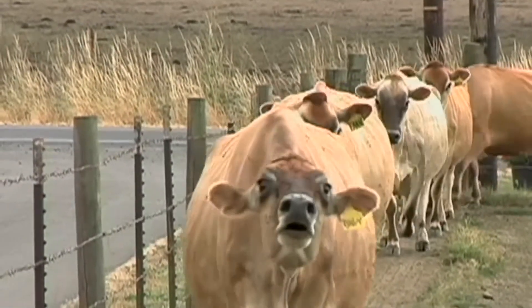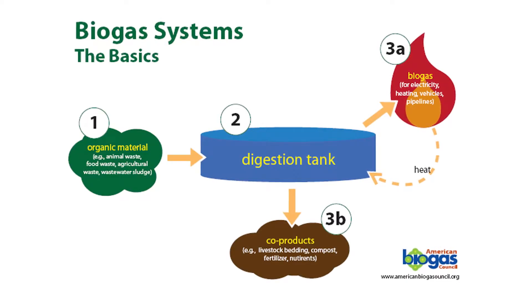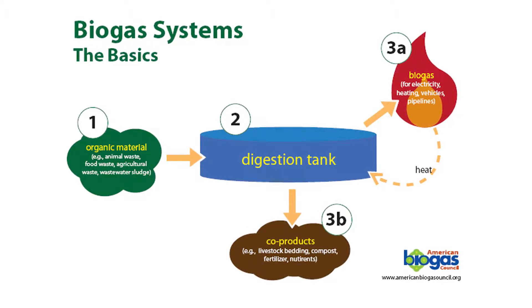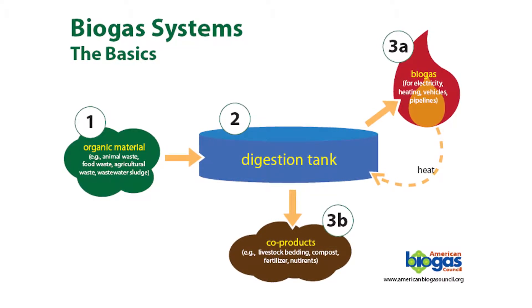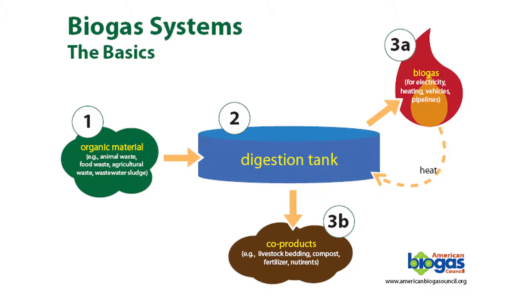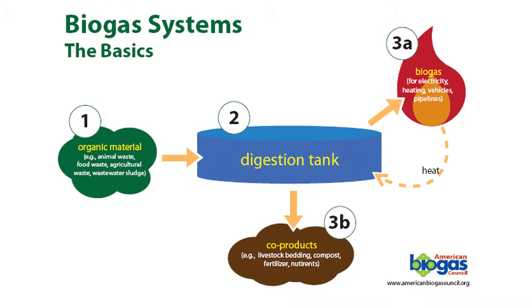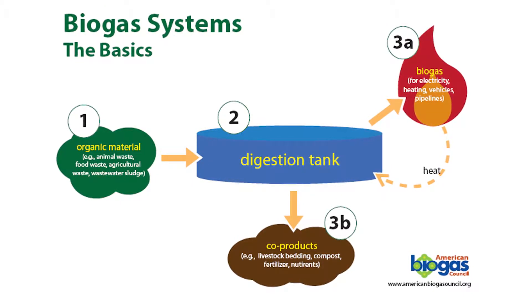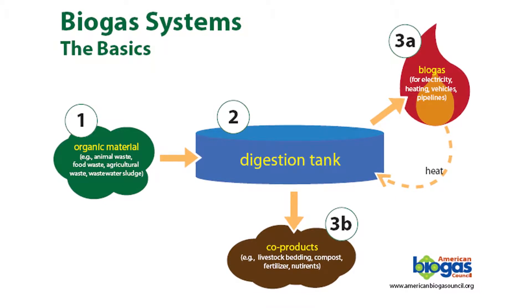But what is an anaerobic digester? An anaerobic digester, or AD for short, is the controlled breakdown of organic matter without air to produce a combustible biogas and nutrient-rich organic byproduct.